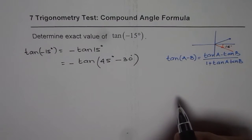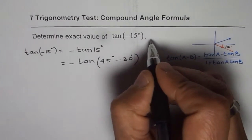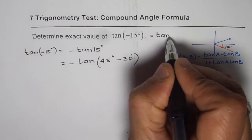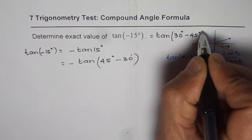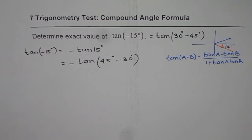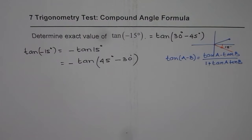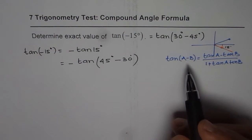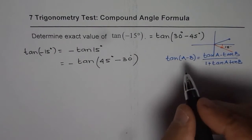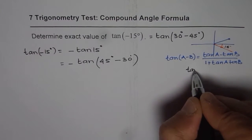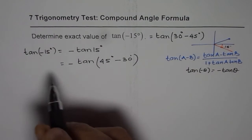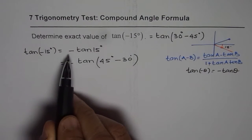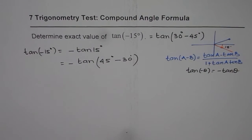Some of you can also write tan of minus 15 degrees as equal to tan of 30 degrees minus 45 degrees — that is another option — and then apply this formula. But I prefer to do it the previous way, since it gives an opportunity to remind you that tan is an odd function. Remember: tan of minus theta is minus tan theta. So tan of minus 15 degrees is minus tan 15 degrees. I prefer this way.